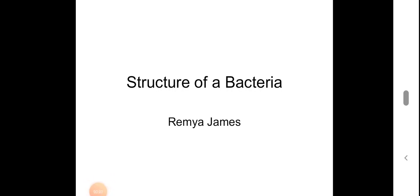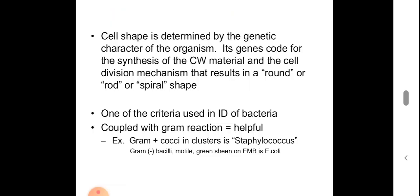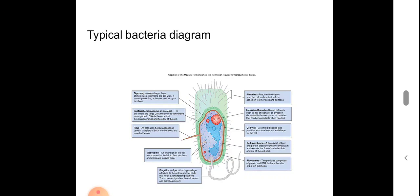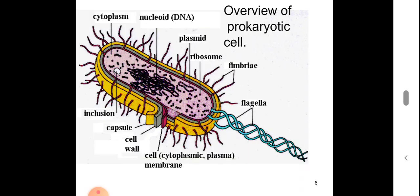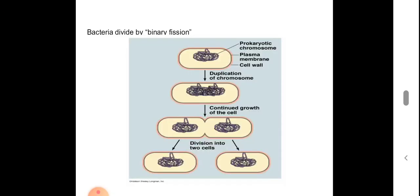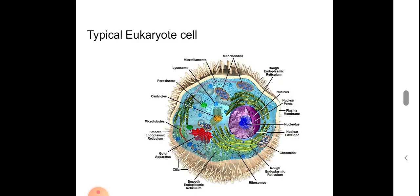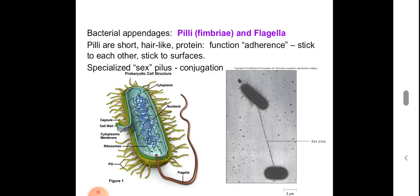Dear students, we were discussing about the structure of bacteria. We discussed the overall appearance, the different shapes it attains, the overall features of the typical bacteria, the bacterial chromosome, plasmids, ribosomes, binary fission shown by bacteria, and the differences between eukaryotes and prokaryotes. Now we are moving to the different parts of bacteria in a bit more detail — the morphological features of each structural part of the bacteria.